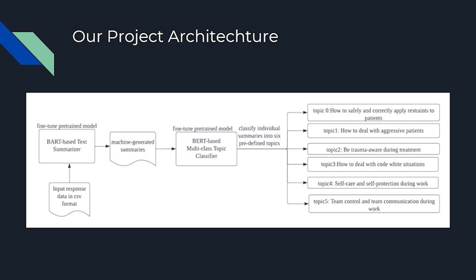I will talk about the architecture of our project. First, we take the response data in CSV format, and then we feed it to our text summarizer, which is a pre-trained model fine-tuned by us. It will generate some summaries, and based on these summaries, we use a topic classifier, which is also a pre-trained model fine-tuned by us. It will classify the summaries into six predefined topics.